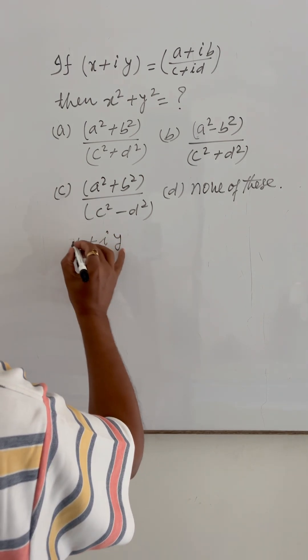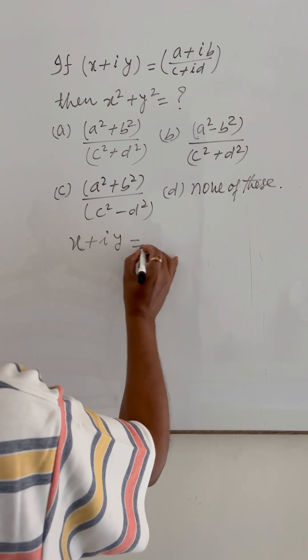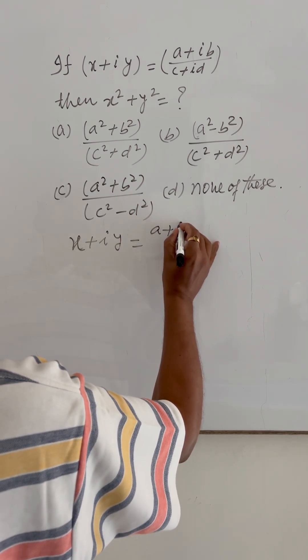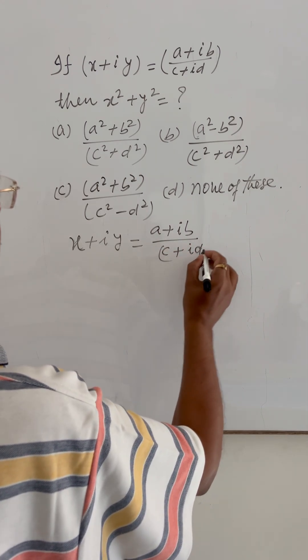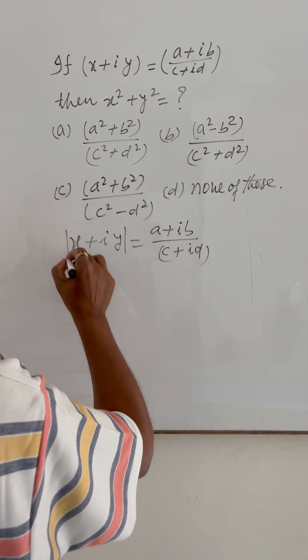Here given: x plus iy equals (a plus ib) upon (c plus id). Taking modulus both sides.